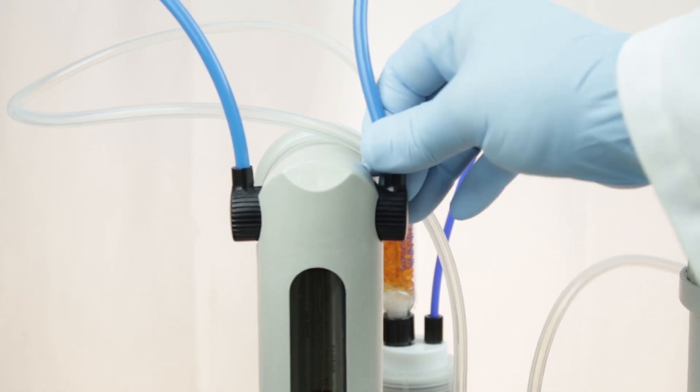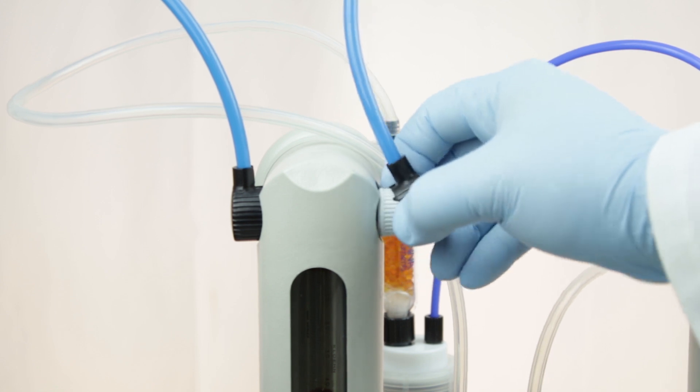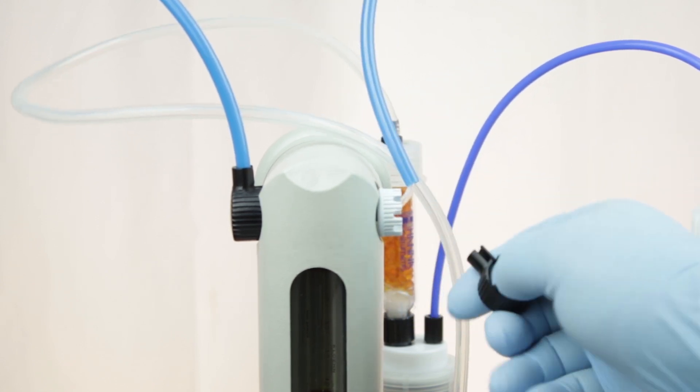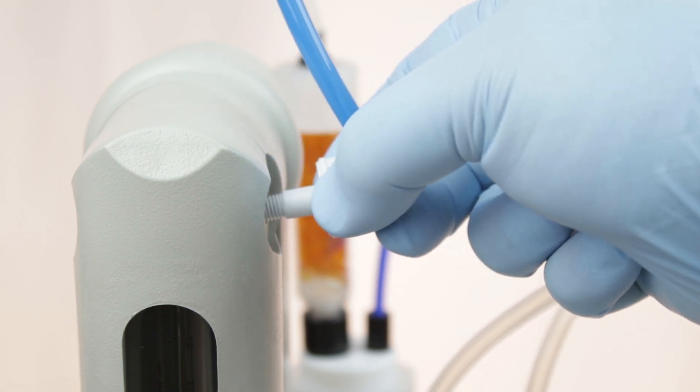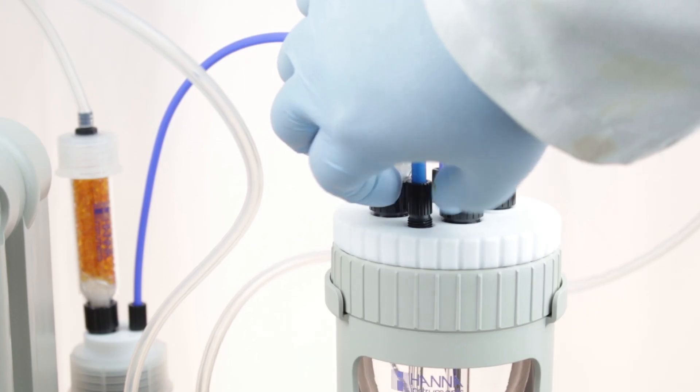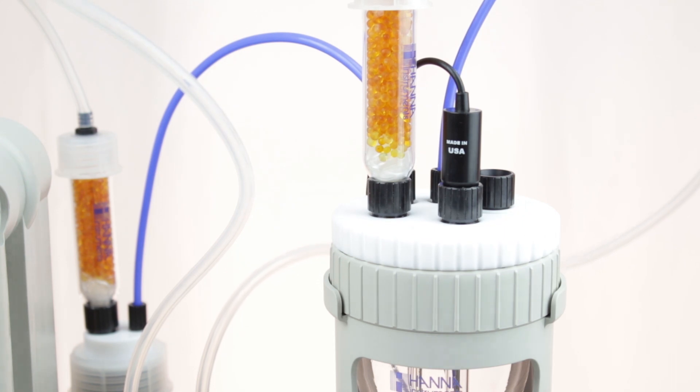Start by pulling off the black cap locks on the tubing. Then, unscrew the tubes from the burette and pull them out. Next, loosen the fitting for the dispensing tip on the cell and remove the tubing.